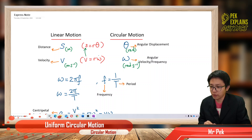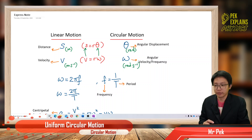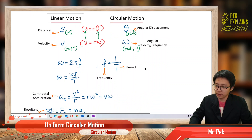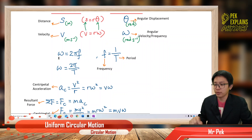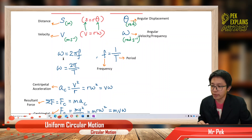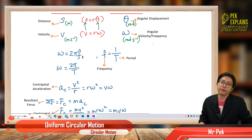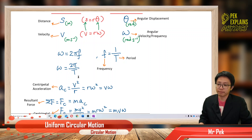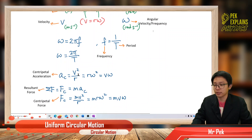We also have the formula ω = 2πf, and since frequency equals 1 over period, when we substitute we get ω = 2π over the period. That is a very important formula.